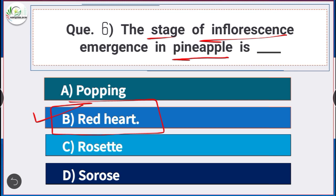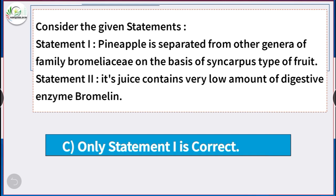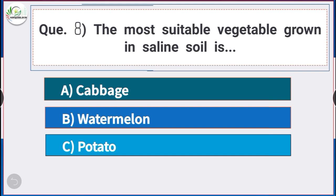Question number 7: Consider the given statements. Statement 1: Pineapple is separated from other genera of the family Bromeliaceae on the basis of syncarpous type of fruit. Statement 2: Its juice contains a very low amount of digestive enzyme bromelain. Only statement 1 is correct.